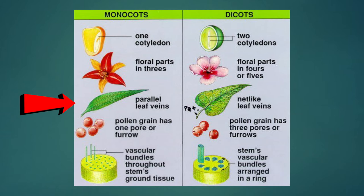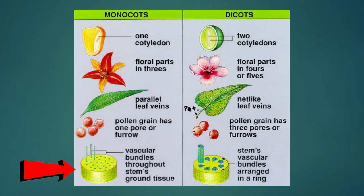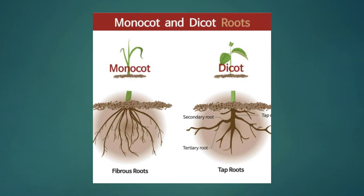Dicots have major leaf veins that are reticulated, meaning they have a complex net pattern, and when torn they have jagged edges. For monocots, the stem vascular bundles are scattered, while in dicots the stem vascular bundles are arranged in a ring. Monocots have adventitious roots found at the base of the soil, while dicot roots develop from the radicle and go deep down into the soil.